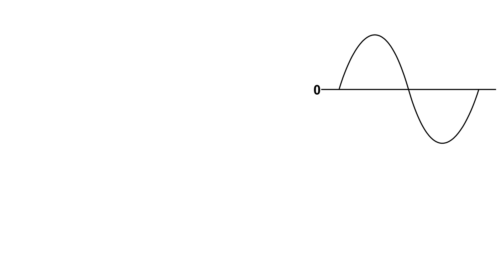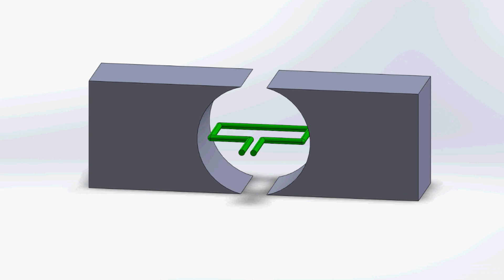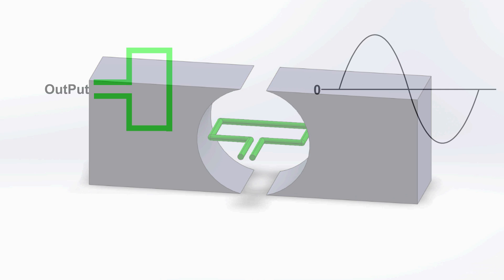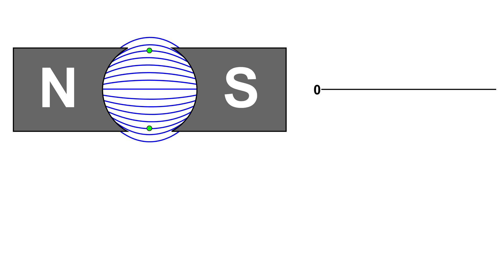A YouTuber asked me about a drawing — what it means. I'm going to draw a very simple AC generator. Here's the wire loop we're going to use, and the output is all the way to the left. In this video you can see the construction of this simple AC generator. We're going to rotate the wire between two magnets. We've got a north pole and a south pole, and the blue lines are the magnetic fields — and of course there would be many, many more lines.